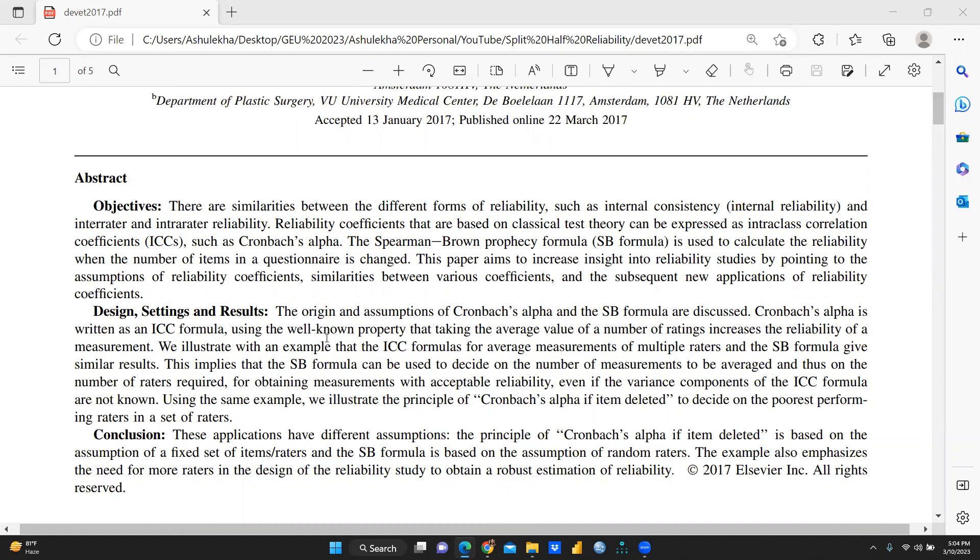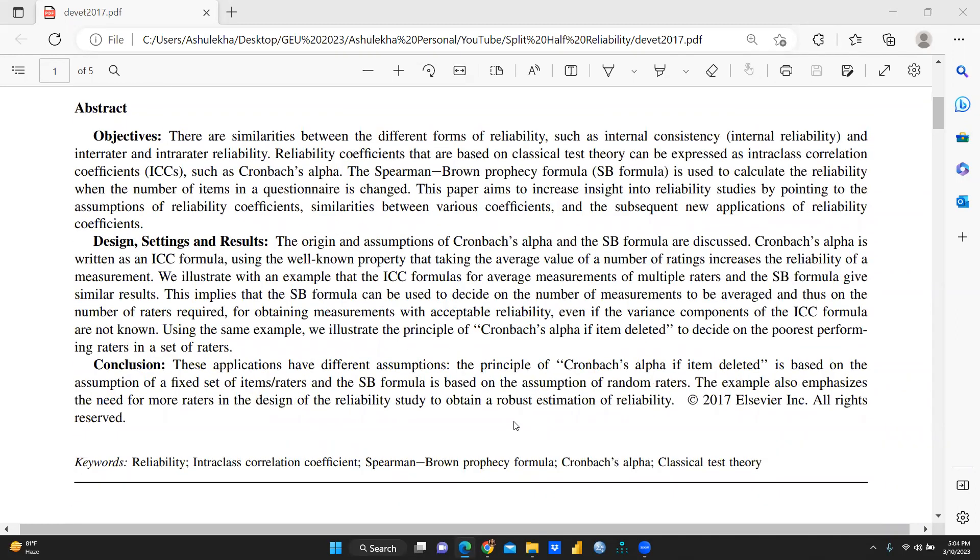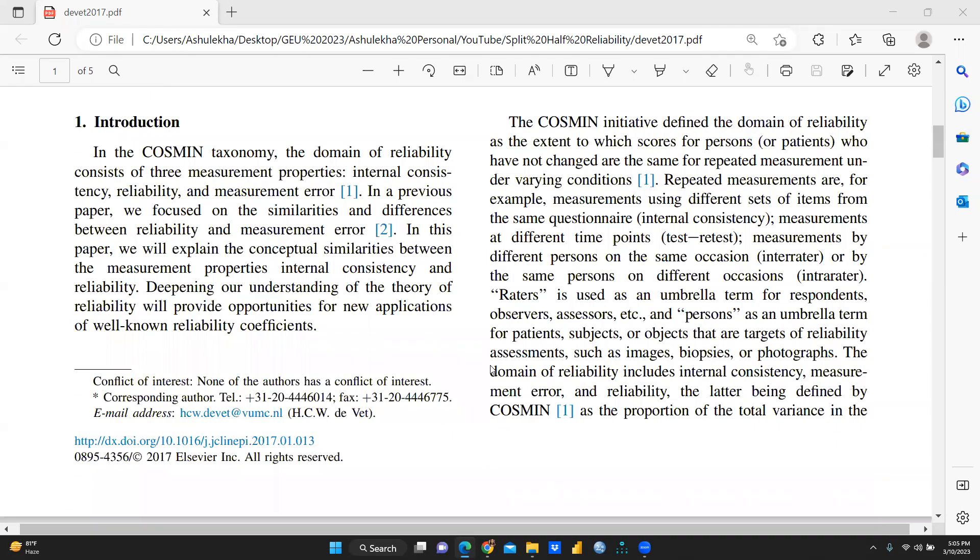It is written as Cronbach's alpha is written as an ICC formula. You can see here ICC formula. And what is the conclusion of this particular paper? So these applications have different assumptions. For the Cronbach's alpha, if item deleted is based on assumption of a fixed set of items, and the SB formula, SB formula stands for Spearman-Brown prophecy formula, is based on the assumption of random raters. The example also emphasizes the need for more raters in the design of the reliability study to obtain a robust estimation of reliability.